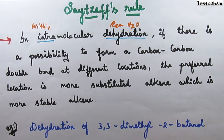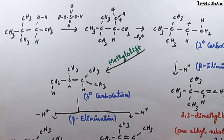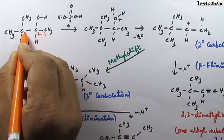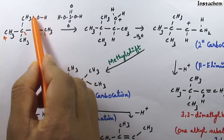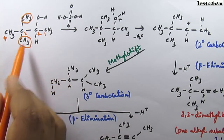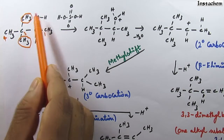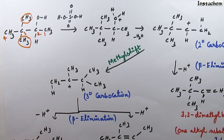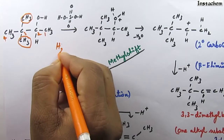We can understand better by using one example. Dehydration of 3,3-dimethyl-2-butanol. Let's see the chemical reaction to understand better about Saytzeff's rule. Look at this organic compound — it is 3,3-dimethyl-2-butanol. Let us give numbering: 1, 2, 3, 4. At second carbon we have OH group, alcohol group. At third carbon we have 2 methyl groups. So 3,3-dimethyl with 4 carbons in the long chain — 2-butanol. It undergoes dehydration in the presence of concentrated sulfuric acid, H2SO4, which is a good dehydrating agent.